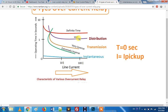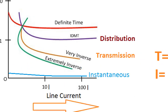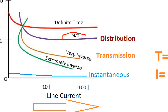If we say IDMT, what is the basic concept of inverse? The timing is inversely proportional to the current. For example, if it is 10 amps it will be 5 seconds; if it is 100 amps it will trip faster. So the relay has different characteristics depending on the current.